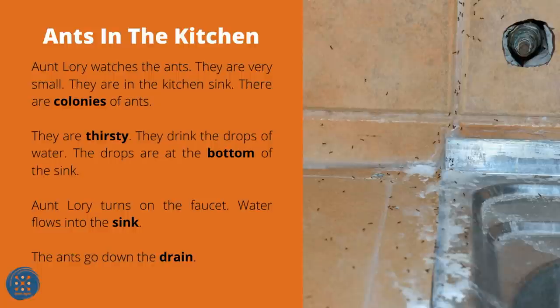Ants in the Kitchen. Lori watches the ants — they are very small. They are in the kitchen sink. There are colonies of ants. They are thirsty. They drink drops of water at the bottom of the sink. Lori turns on the faucet. Water flows into the sink. The ants go down the drain.